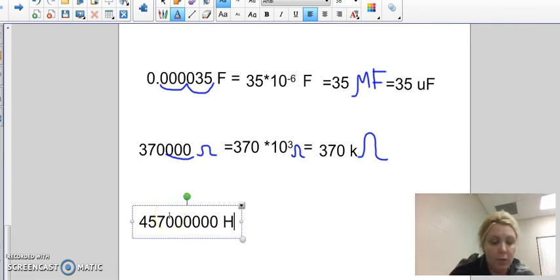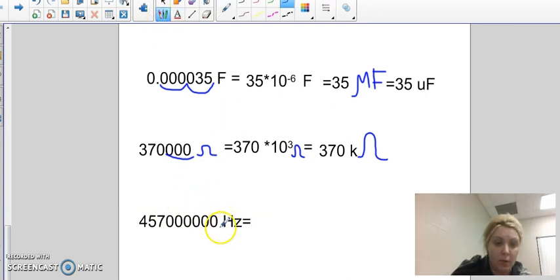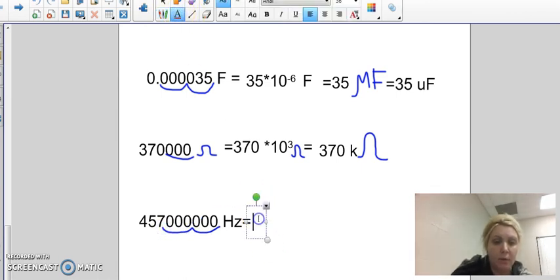My units are going to be Hertz. First, let's turn this into engineering notation: one, two, three, one, two, three. I can stop now, so it's going to be 457 times 10 to the 6, as I'm moving to the left. That's in Hertz, and now I'm going to convert that to Hertz plus some kind of prefix.